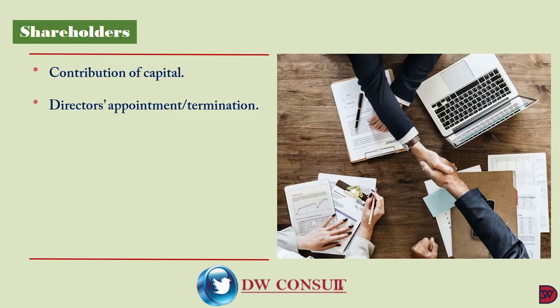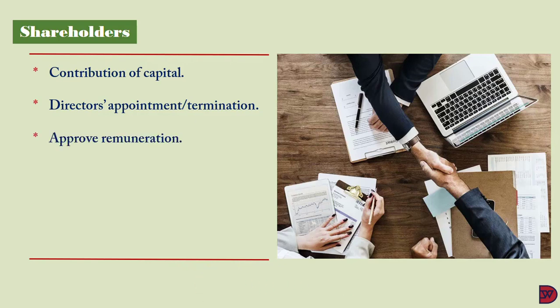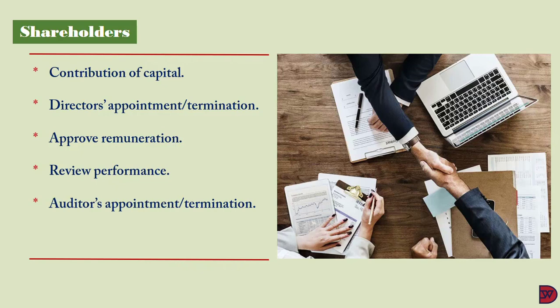Shareholders are also responsible for firing and replacing directors when need be. They approve the salaries and reward packages in the form of bonuses to the directors — packages which directors usually propose for shareholders to view and assent to at their annual general meetings. They meet to assess the performance of management against set targets for the period, which feeds into the decision to retain, replace, or reward them. Members are also responsible for appointing independent external auditors to serve as a check on management, and can fire and replace them when their performance falls below par. Lastly, they approve the fees for the external auditors they appoint.